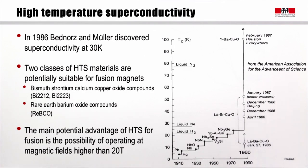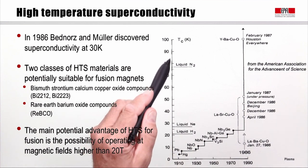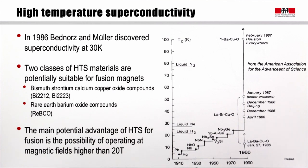High-temperature superconductivity was discovered by Bednorz and Müller in 1986 in Switzerland, showing superconductivity at 30 Kelvin. Critical temperatures for different materials have evolved throughout the years, with a big jump when HTS was discovered. Today, two classes of HTS materials are suitable for fusion magnets: bismuth strontium calcium copper oxide compounds (Bi2212 or Bi2223), and rare-earth barium copper oxide compounds, generally referred to as REBCO.